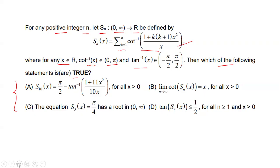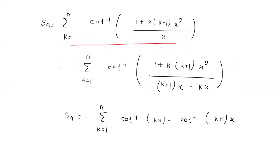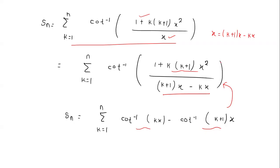Let's simplify the summation. The numerator is 1 + k(k+1)x² and the denominator is x. We can write x as (k+1)x minus kx. This matches the formula for cot inverse of kx minus cot inverse of (k+1)x, since we have two pairs: kx and (k+1)x, in both numerator and denominator. So each term equals cot⁻¹(kx) − cot⁻¹((k+1)x).